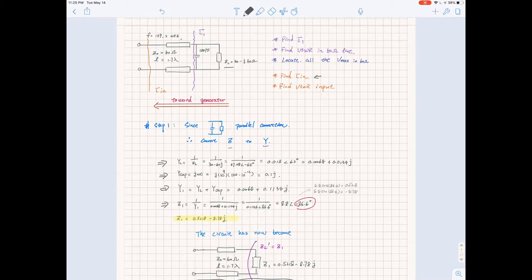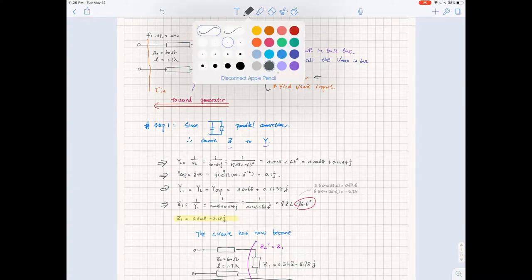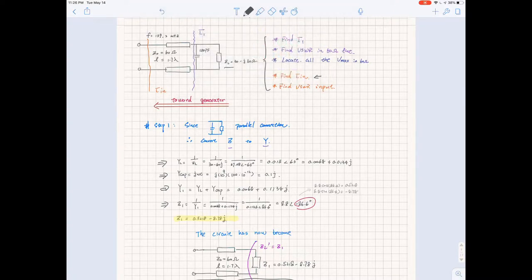This is the problem that we did in the lectures. We are given a system with a 100 picofarad capacitor and a load connected in parallel, and the transmission line has a characteristic impedance of 60 ohm and a length of 1.7 lambda. The frequency is 159.2 megahertz, and we are trying to find all the attributes from the transmission line. We are going to go over the question in the order of going toward the generator.